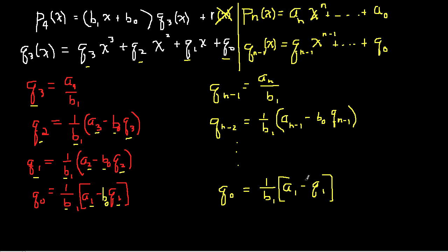This suggests a general relationship for any order polynomial, not just degree four. For a general nth-order polynomial, the quotient coefficients obey this rule: q_{n−1} = aₙ/b₁, and q_{n−2} = (1/b₁)·(a_{n−1} − b₀·q_{n−1}), continuing all the way down to q₀ = (1/b₁)·(a₁ − b₀·q₁).